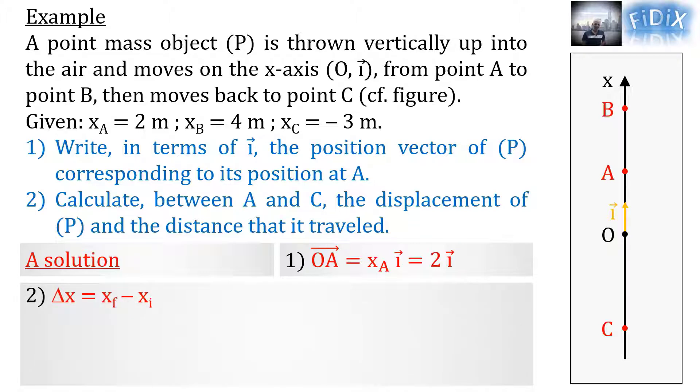For the displacement in question 2, we write delta X equals XF minus XI, which means XC minus XA, since point C corresponds to the final position and point A corresponds to the initial position. We replace these abscissas by their values and get negative 5 meters. This means that as a result, the object moved 5 meters in the negative direction from its original position.